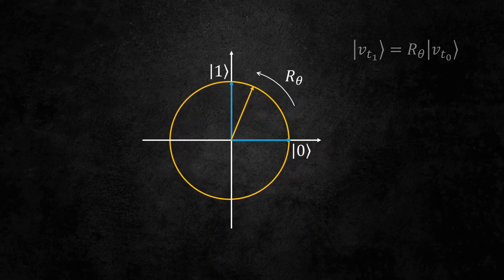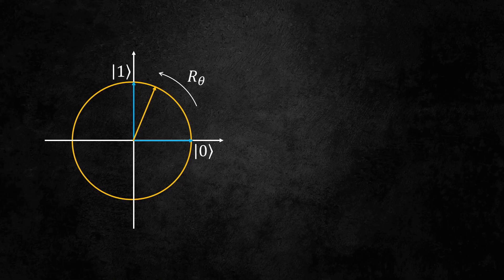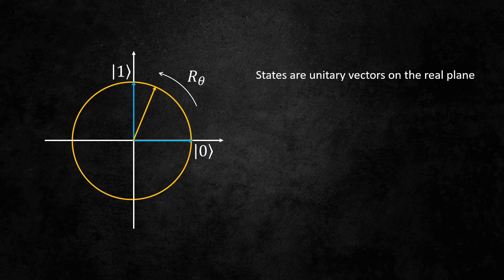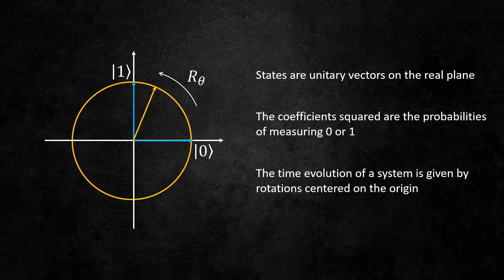These are fundamental properties of quantum mechanics. And it turns out that they have a very nice geometry meaning. So in summary, states are unit vectors on the real plane. The coefficients squared are the probabilities of measuring 0 and 1. And the time evolution of a system is given by rotations centered on the origin.